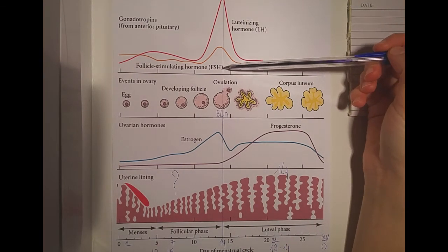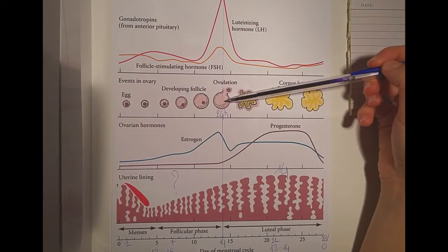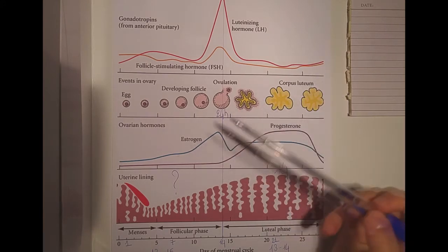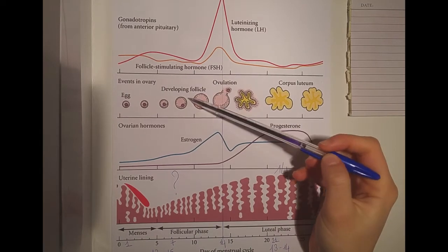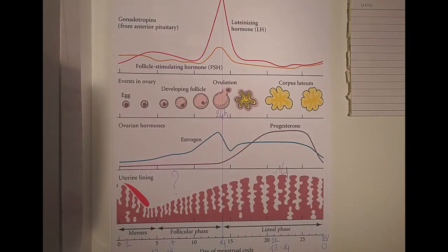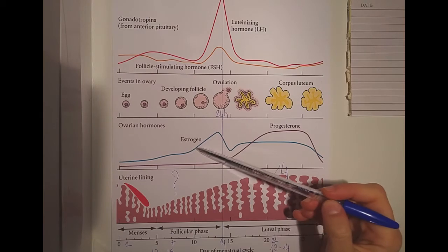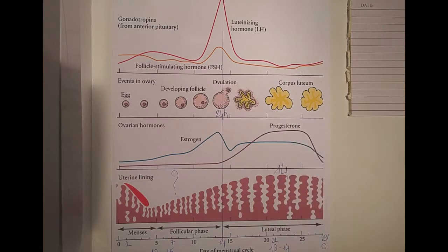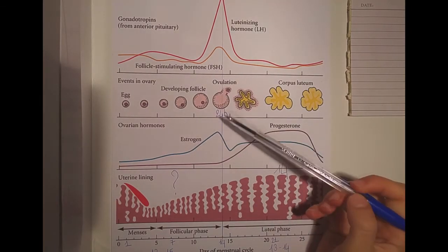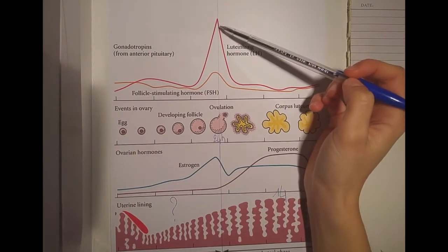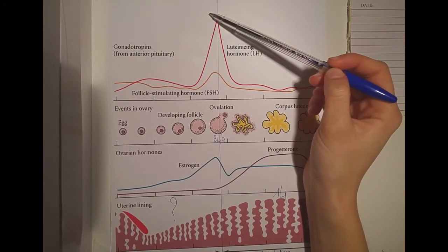Essentially, FSH is produced and induces egg maturation, which lasts approximately 14 days — though it may last longer or shorter. The follicle itself produces estrogen, and the amounts start increasing dramatically from around day 10 to day 14, when the follicle is big enough to produce a lot of it. Estrogen then reaches a certain peak.